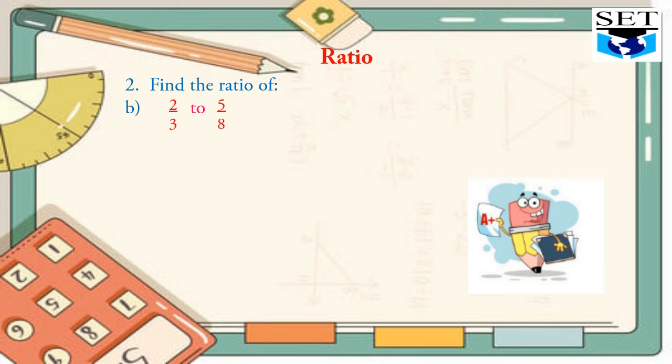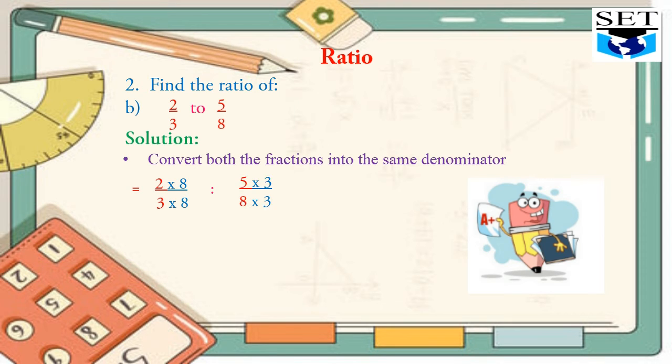Another question. In this question, we have to find a ratio of 2/3 to 5/8. We have to find a ratio between these two fractions. How will we solve it? Let's begin its solution. We have to follow a rule that we have to convert both fractions into the same denominator. We will multiply the first fraction by 8 and multiply the second fraction by 3. After multiplying 3 by 8 and 8 by 3, we will get the same denominator.